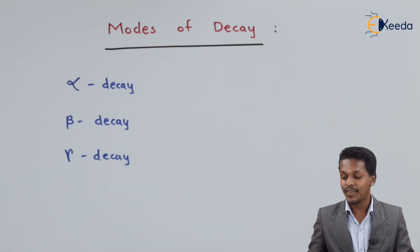This is how we are going to talk about in our next topic. But for now, it is sufficient to understand what are the three modes of decay: alpha, beta and gamma.